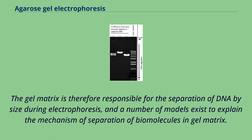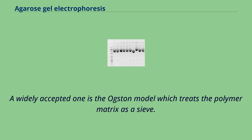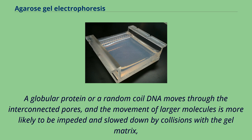A widely accepted one is the Ogston model, which treats the polymer matrix as a sieve. A globular protein or a random coil DNA moves through the interconnected pores, and the movement of larger molecules is more likely to be impeded and slowed down by collisions with the gel matrix. Molecules of different sizes can therefore be separated in the sieving process.